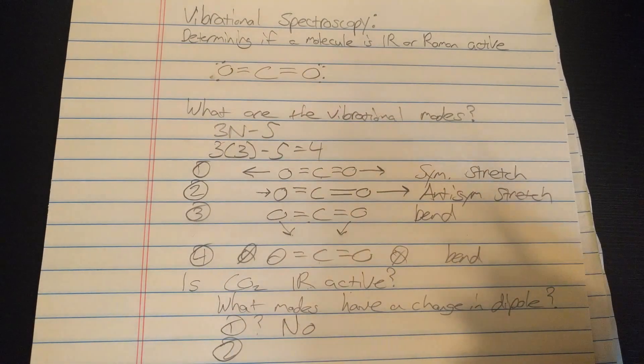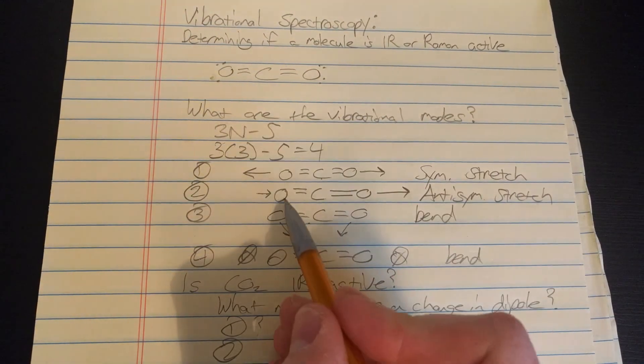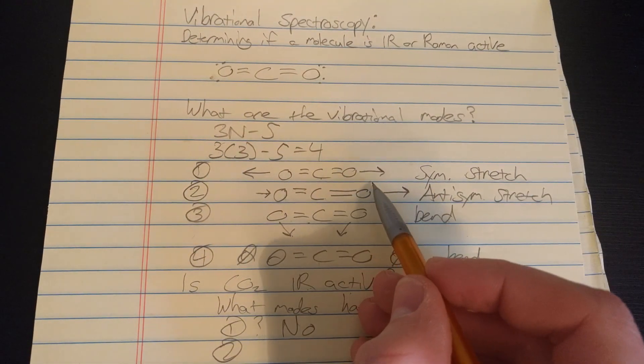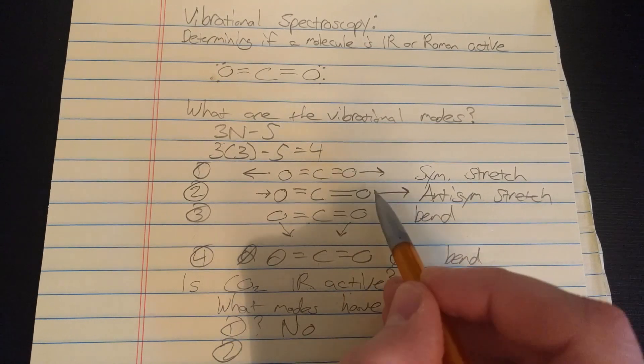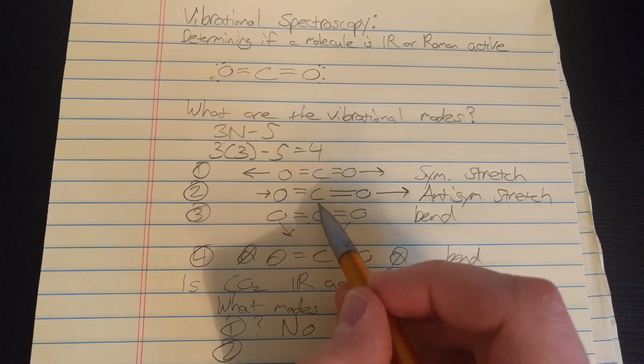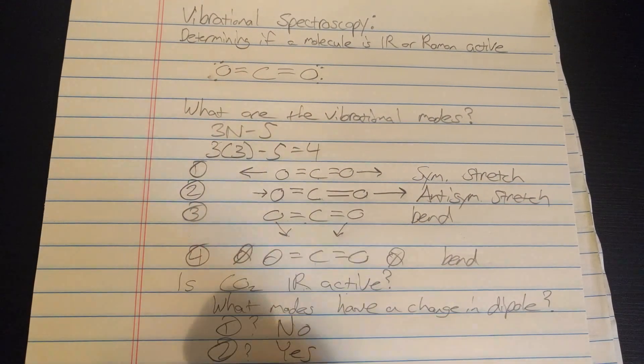Does mode two have a change in dipole? Yes it does actually. If one oxygen is going in but one stretching out you're going to have a dipole that points towards where a lot of negative charge is going to be near the oxygen. So the dipole would point towards the oxygen. So that is yes.